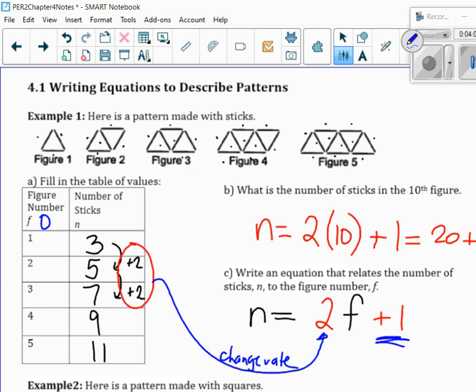Well, if I were to go to figure 0 using the same pattern, what number would it be? So, if I'm going forward, I'm adding 2. If I'm going backwards, I'm subtracting 2 and I would get 1. Well, that is where I'm getting this second number from. This is the starting amount at figure 0.